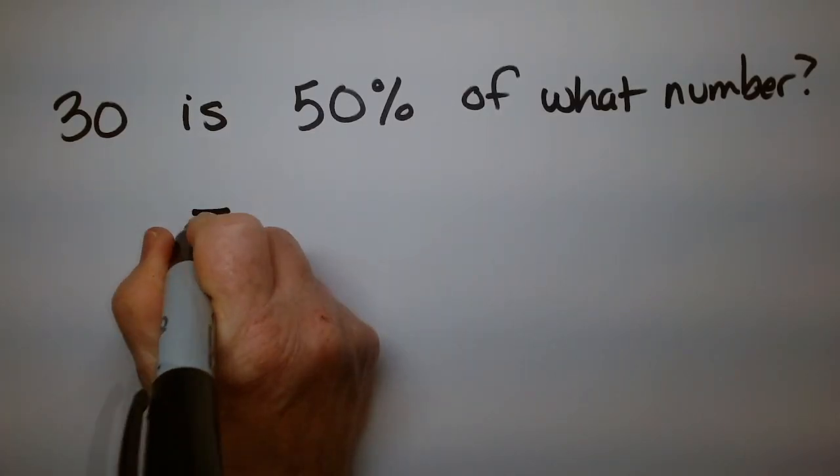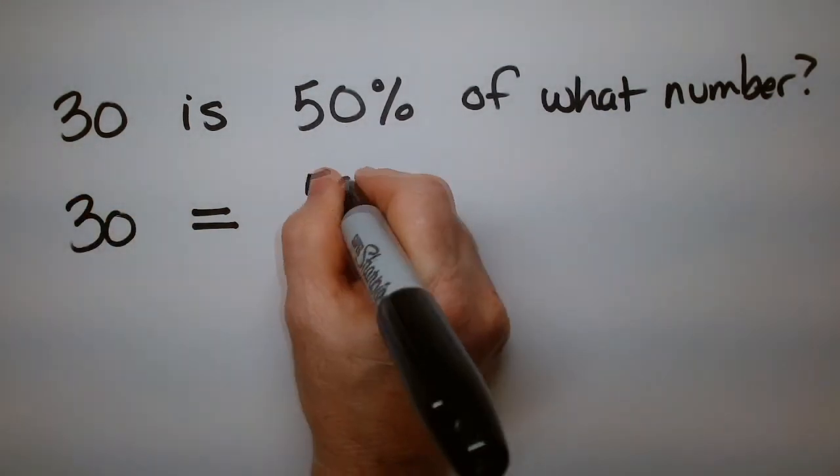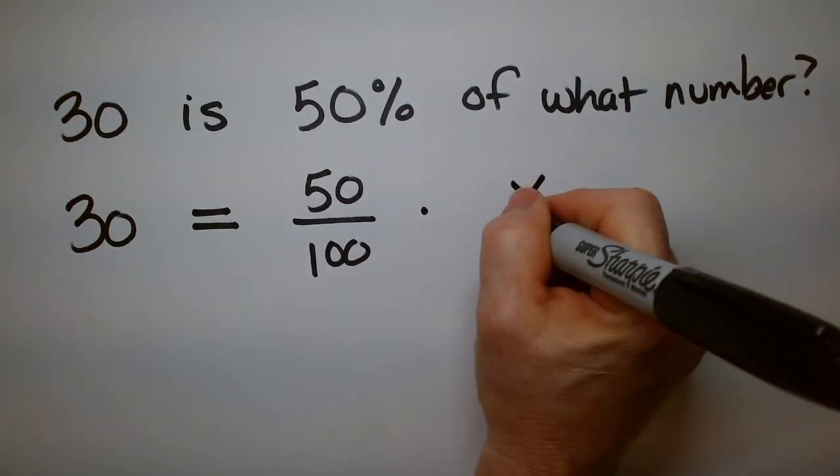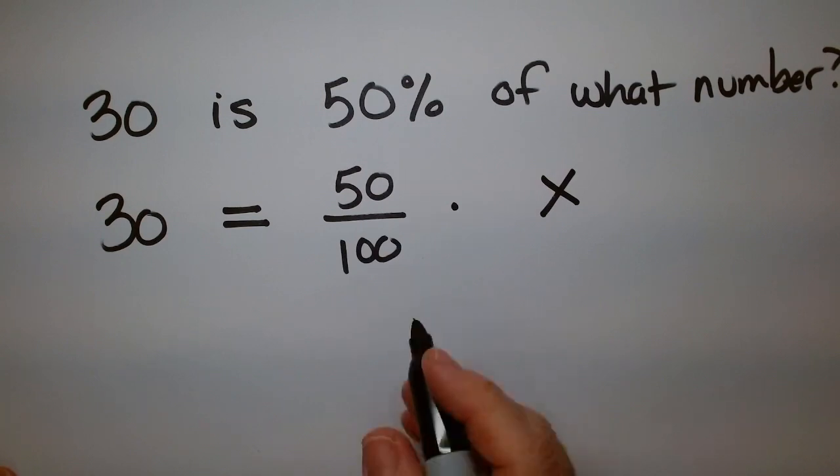So here's my is. And then we just write down the 30. 50% we write that as a fraction. Of is multiply. What number is X. So now I'm going to divide both sides by 50 over 100. So I'm going to multiply by 100 over 50. Same thing.